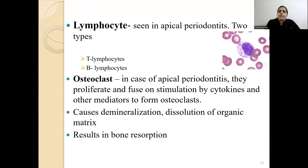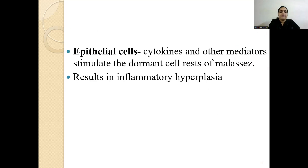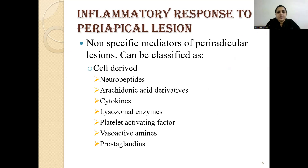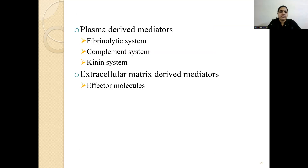Lymphocytes include T-lymphocytes and B-lymphocytes. Osteoclasts are cells that cause demineralization, dissolution of the organic matrix, and ultimately bone resorption. In apical periodontitis, they proliferate and fuse on stimulation by cytokines and other mediators to form osteoclasts. Epithelial cells: cytokines and other mediators stimulate the rests of Malassez, resulting in inflammatory hyperplasia. Inflammatory mediators can be classified as cell-derived, nonspecific mediators, plasma-derived, and extracellular matrix-derived.